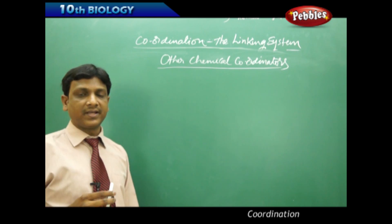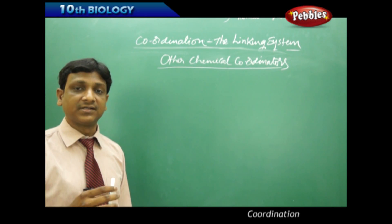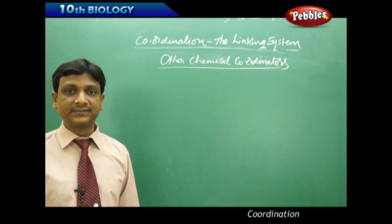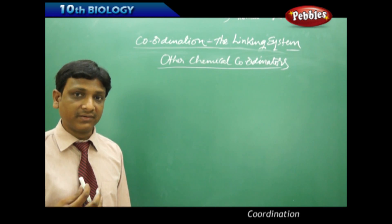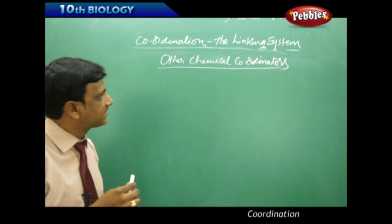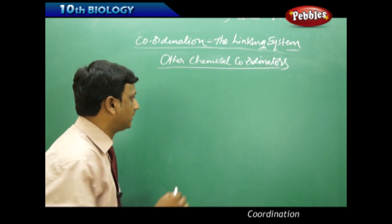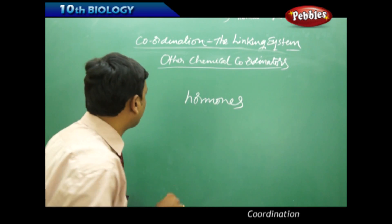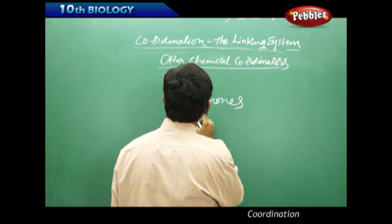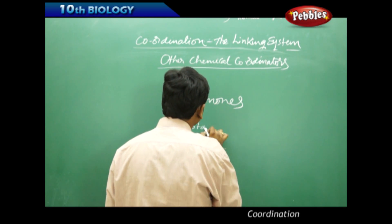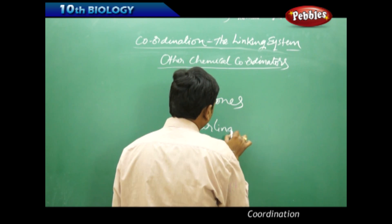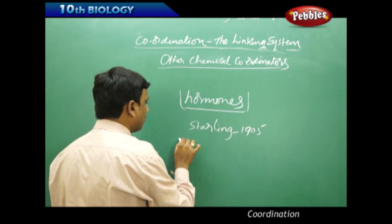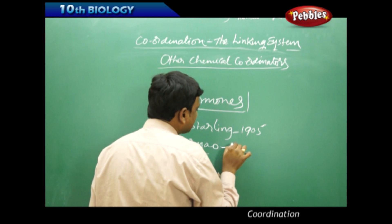There are some other chemical coordinators in our body, just like insulin which we have discussed. What are these chemical coordinators called? These are chemicals secreted by our tissues which have a specific function, and they are called hormones. This name was coined by a physiologist called Starling in 1905. In Greek, 'hormo' means impel.